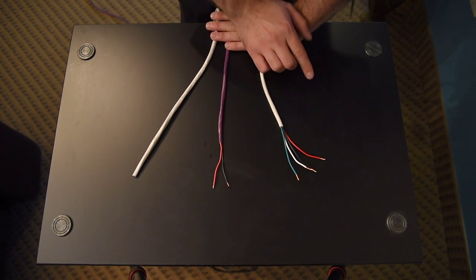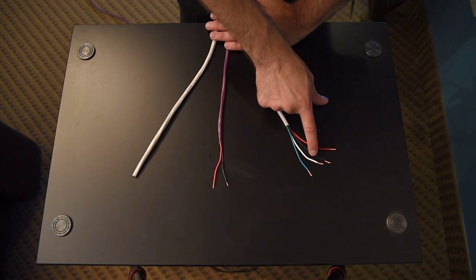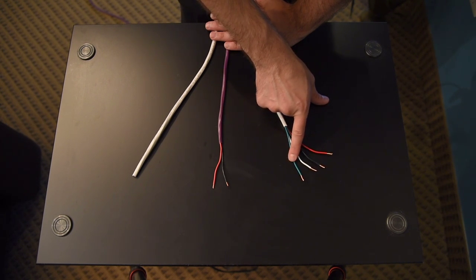Now, the red is usually a positive for a right channel speaker, and black is negative. The white is also going to be positive for a left channel speaker, and the green is going to be negative.